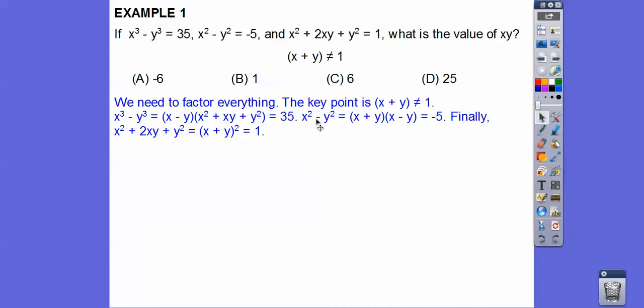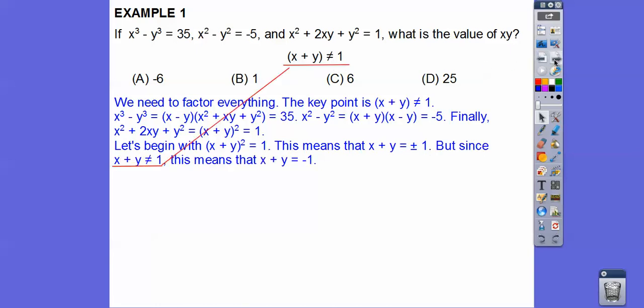Okay, still equals 35. x squared minus y squared is x plus y, x minus y. And finally, x squared plus 2xy plus y squared is x plus y squared. We need to recognize that before we can tackle this problem. Let's begin with this one here. x plus y squared equals 1. That means when we square root both sides, we get plus or minus 1. Now remember, it doesn't equal 1, so we've got to take the negative 1. So x plus y equals negative 1.